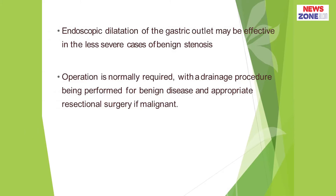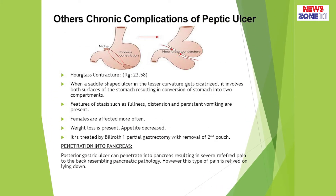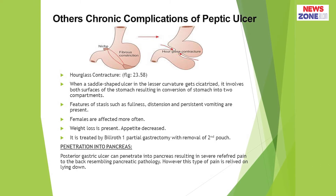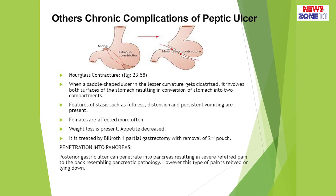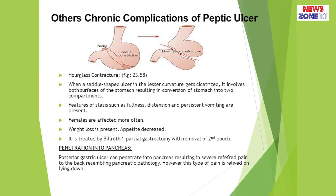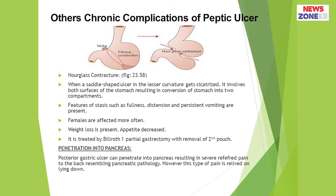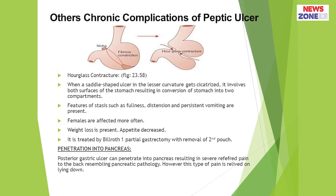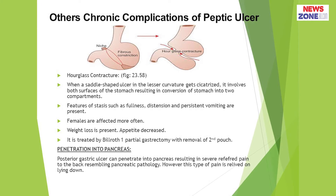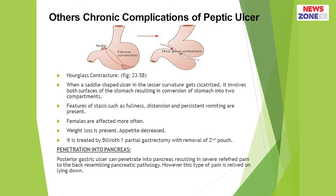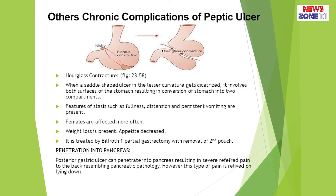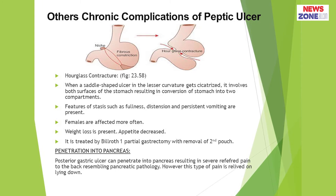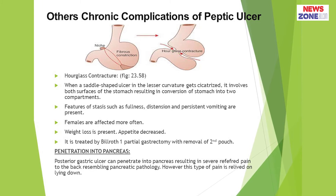This is chronic complication number one — gastric outlet obstruction. There are other chronic complications of peptic ulcer, including hourglass contraction. You can see the picture of the stomach — this is the normal stomach among the abnormal stomachs. Hourglass contraction occurs when a saddle-shaped ulcer in the lesser curvature becomes cicatrized, involving both surfaces of the stomach and resulting in conversion of the stomach into two compartments.